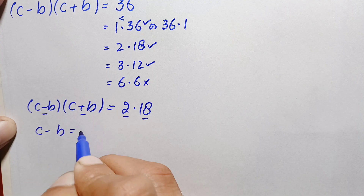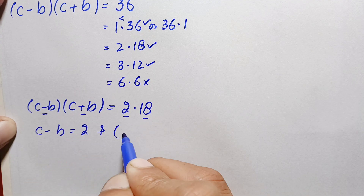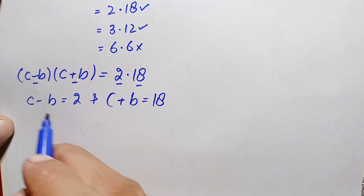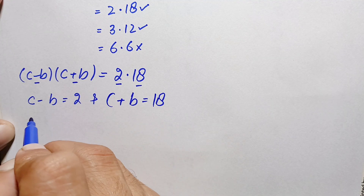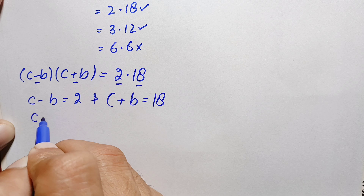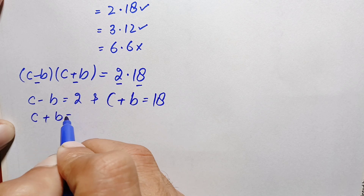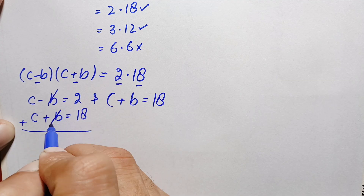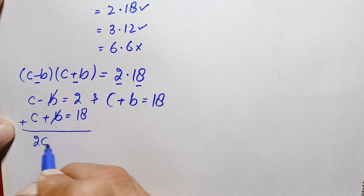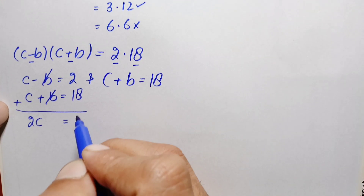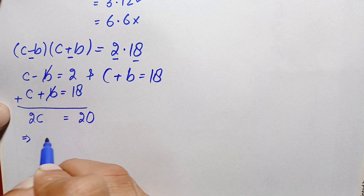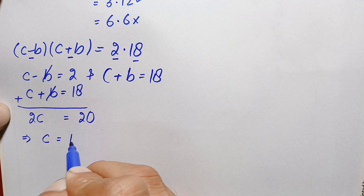Comparing the two expressions, we get: c − b = 2 and c + b = 18. Adding these two equations, the b terms cancel and we get 2c = 20. Dividing both sides by 2 gives c = 10.